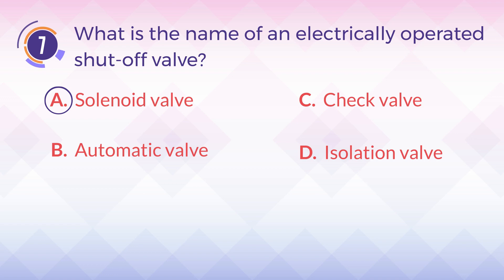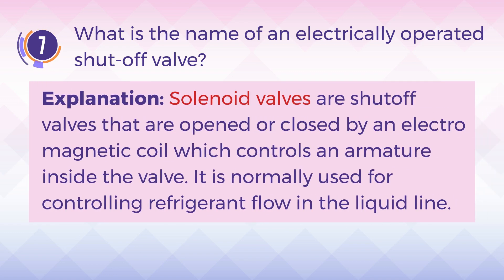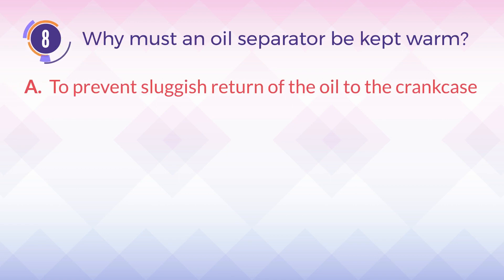The answer is A, solenoid valve. Solenoid valves are shut off valves that are opened or closed by an electromagnetic coil which controls an armature inside the valve. It is normally used for controlling refrigerant flow in the liquid line.